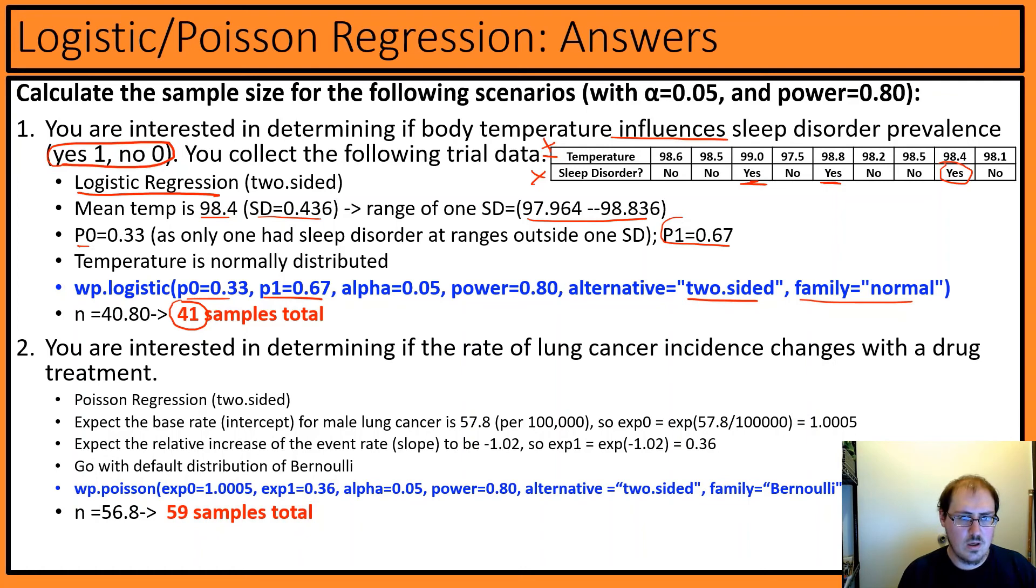For number two, we see the word 'rate of lung cancer incidence change,' which tips me off that it's Poisson regression. Two-sided because it says 'change,' not 'goes up' or 'down.' The base rate, sometimes known as the intercept - I looked this up - the base rate is 57.84 per 100,000, so our base rate is those two divided: 1.0005. Let's say this drug treatment will have a relative increase in the slope - it's going to be negative slope because we think maybe this drug goes down.